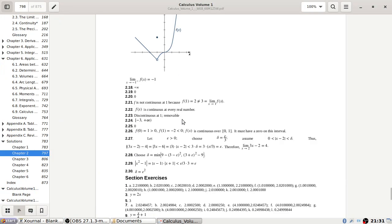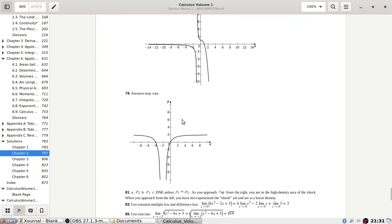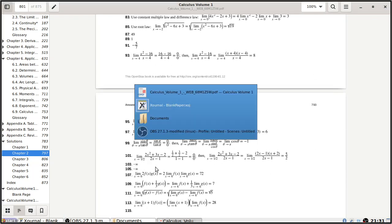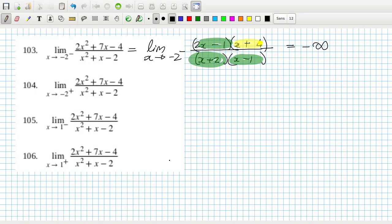103... yeah, negative infinity. Okay, this one here... oh, they're all the same. Okay, that's convenient. They're all the same: 2, 2, 7, 7. So we'll just have to look at the signs again.